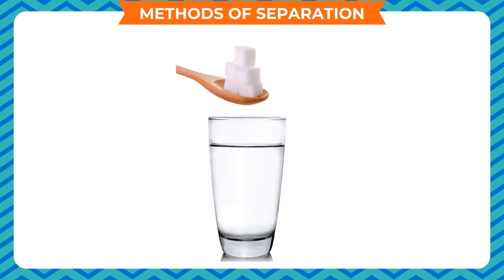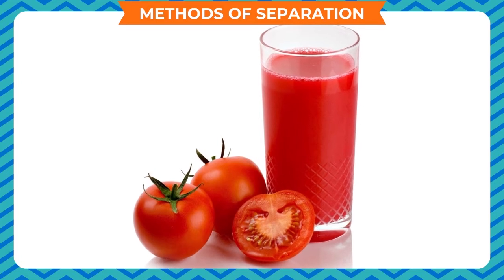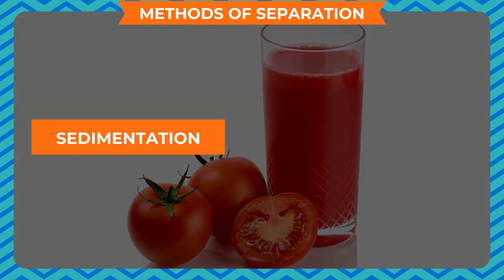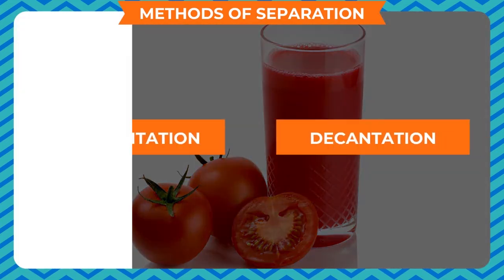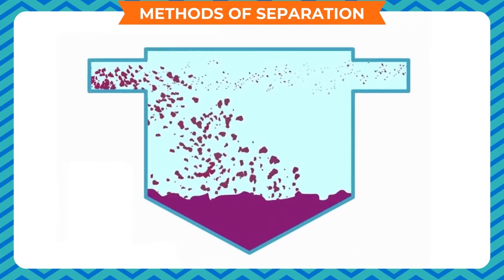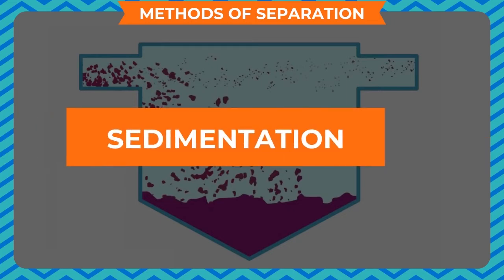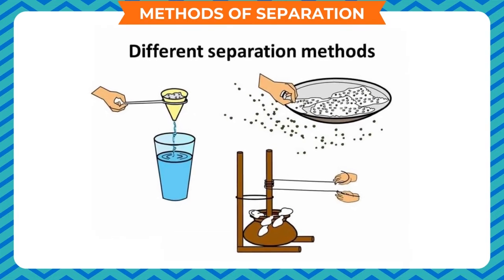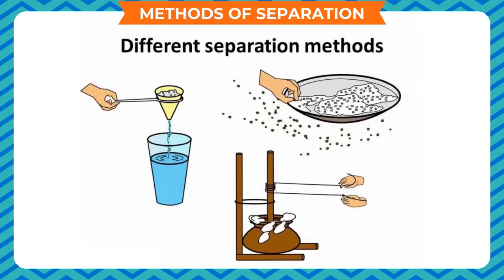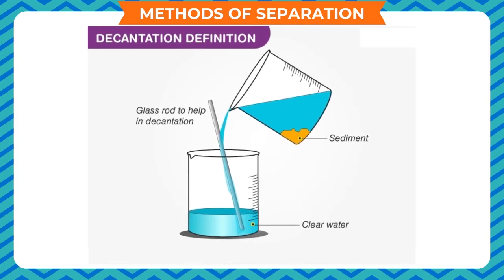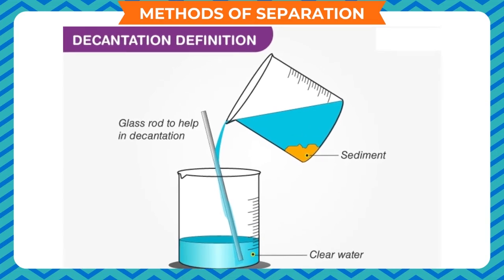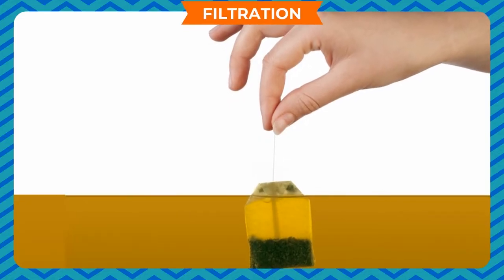Now consider heterogeneous solid-liquid mixtures in which the solvent is water or any liquid and the solute is insoluble in the solvent. Insoluble substances can be removed using various methods. Sedimentation and decantation: insoluble substances heavier than water can be separated by sedimentation and decantation. Sedimentation is the process in which heavier particles settle down to form a sediment. Decantation is the process of pouring out the liquid into another vessel without disturbing the sediment.